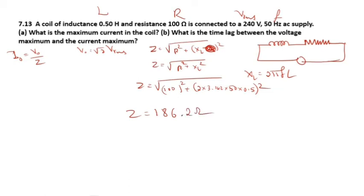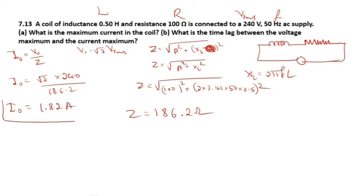The maximum current I₀ = V₀ / Z = (√2 × V_RMS) / Z = (1.414 × 240) / 186.2 = 1.82 ampere. This is the answer for sub-question A.